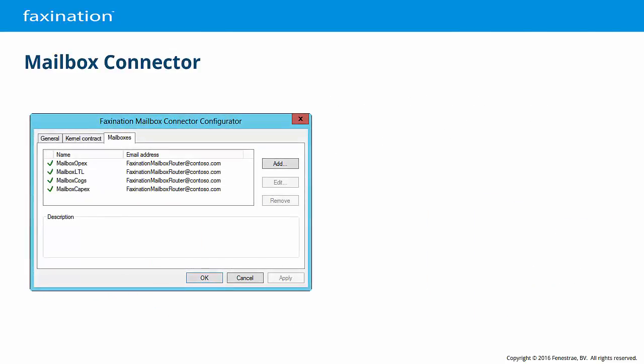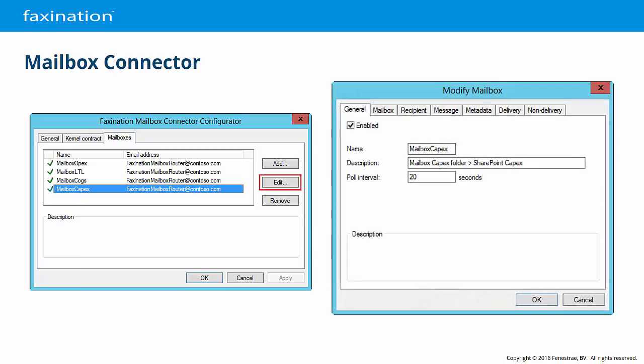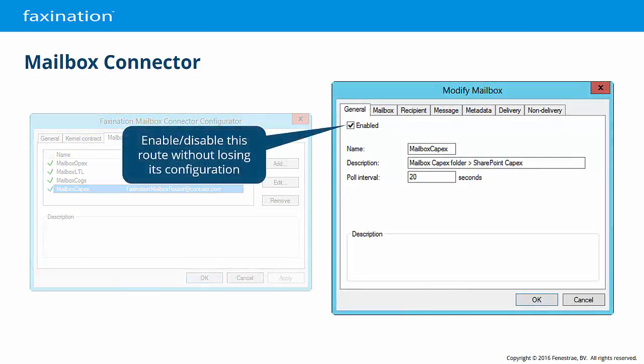Within the Configurator for the Mailbox Connector, in addition to the General and Kernel Contract tabs, is the Mailboxes tab. On the General tab of the Add Mailbox Configurator, we have the ability to enable and disable a configured mailbox. This is useful when troubleshooting or testing alternative configurations.